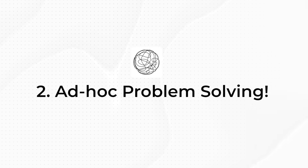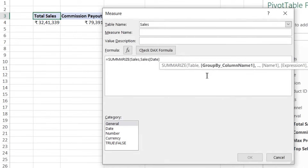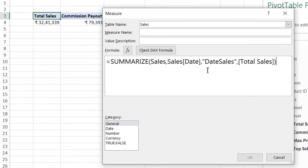Mistake number two: ad hoc problem solving. Once I learned Power Query for about a month or month and a half, I proceeded on to writing DAX formulas using Excel Power Pivot. Soon enough I was in the Power BI environment, writing DAX, doing some Power Query work and things like that. At that time when I was writing DAX, my problem solving approach was very, very ad hoc.